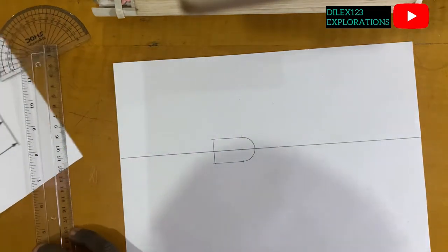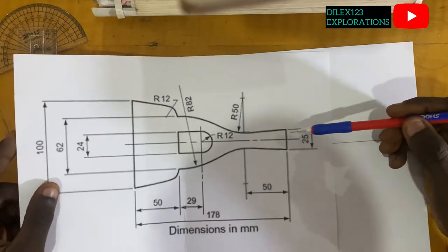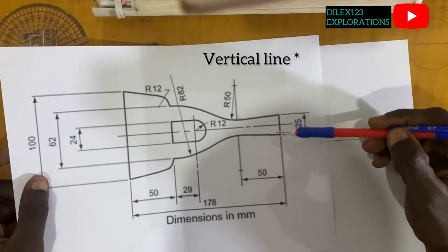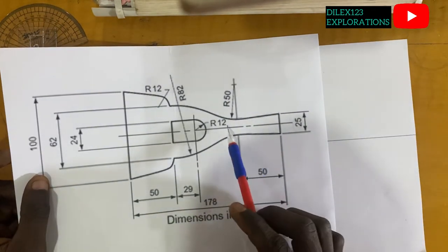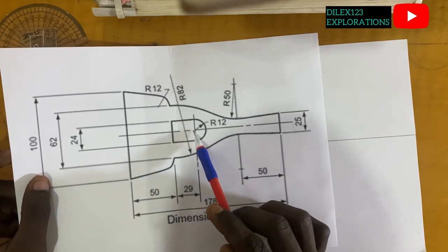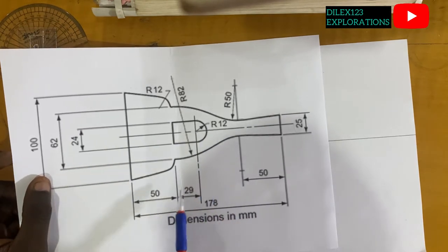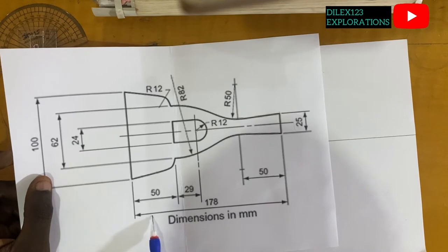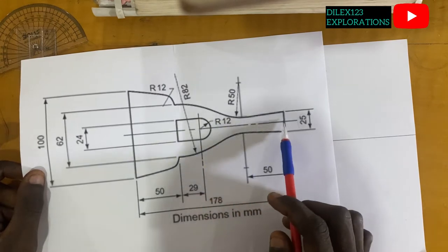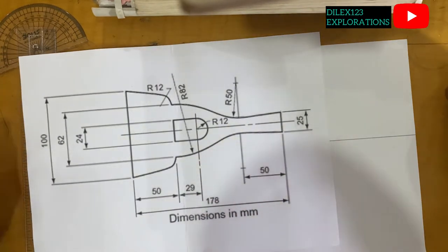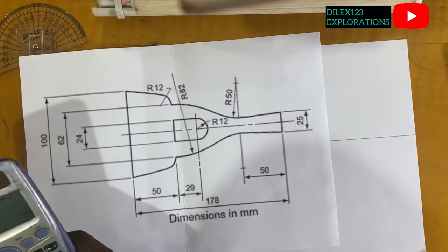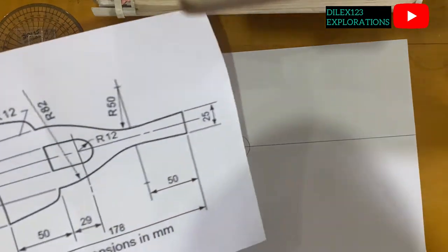The next thing I would like to do will be to construct this 25 millimeter horizontal line. We can see that this line is at a certain distance away from the center of this semicircle. To find that distance, we first have to subtract these two distances — 50 and 29 — from 178. When you subtract, you get 99. So 178 minus 79 is 99, and you pick 99 millimeters from your rule.